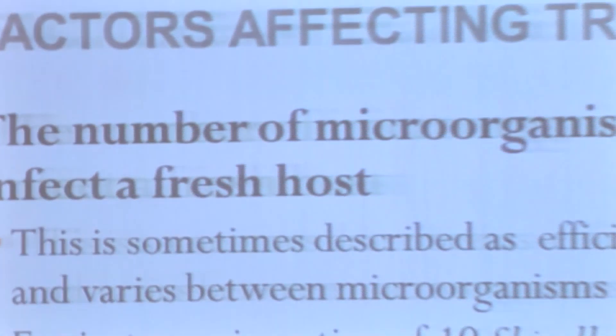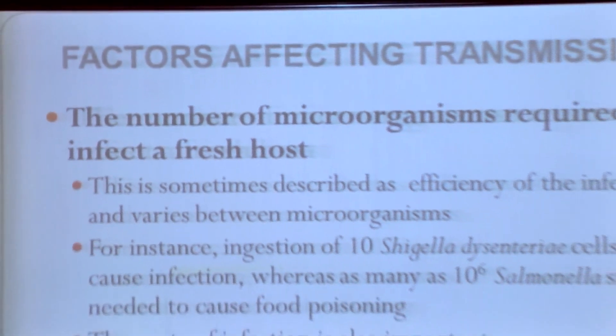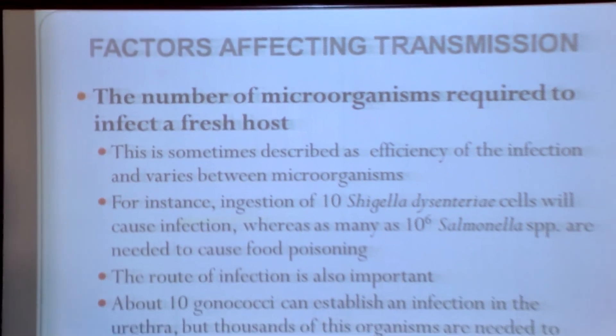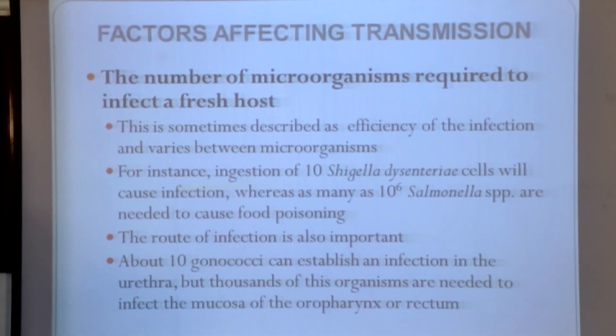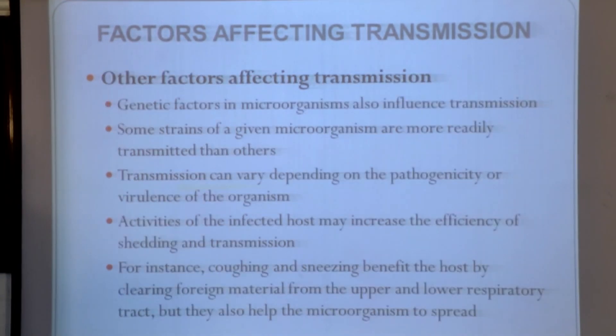The route of infection is also very important in causing infection or transmission. For example, if you consider Gonococci, 10 cells will be enough to cause infection if they directly enter into the urethra. But if they are entering through other routes like the mucosa of the oropharyngeal region or the rectum, thousands of cells will be required.